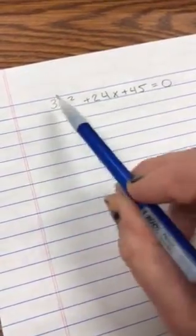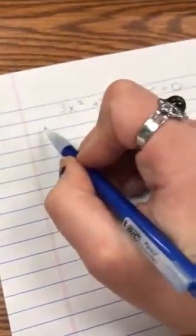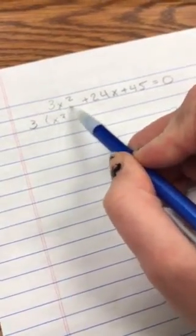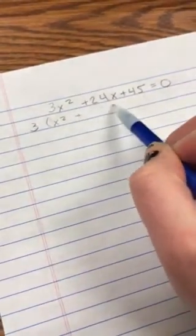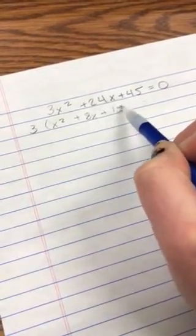3, 24, and 45, since it's already set equal to 0. Those are all divisible by 3, so I'm going to factor out a 3 and bring my 3 out front. Then I'm left with x squared, divide that by 3, plus divide by 3, 8x, divide by 3, 15.